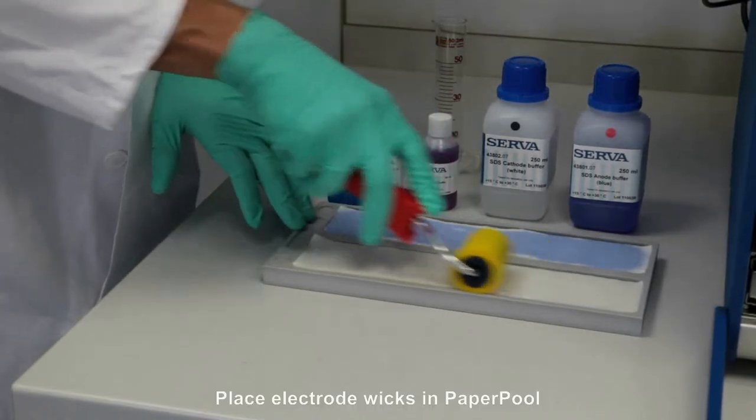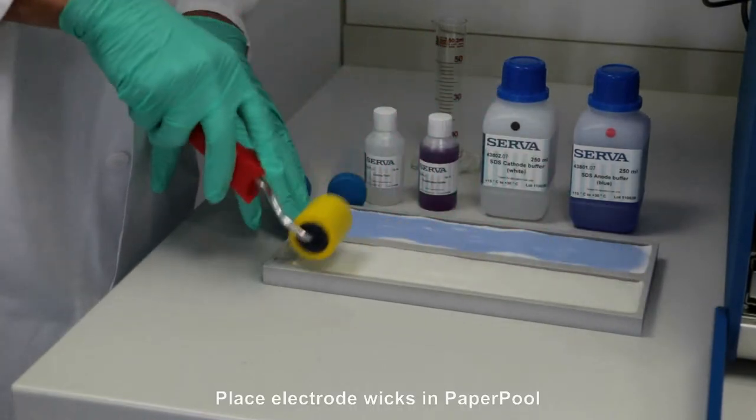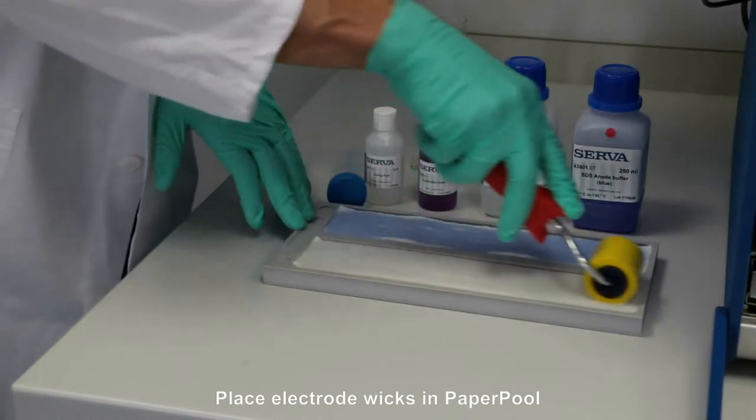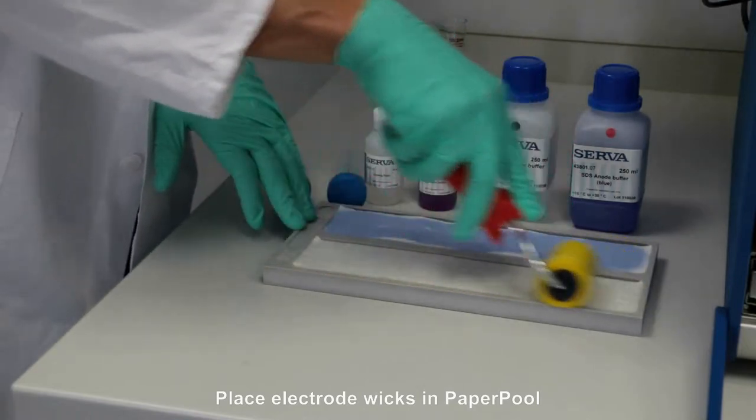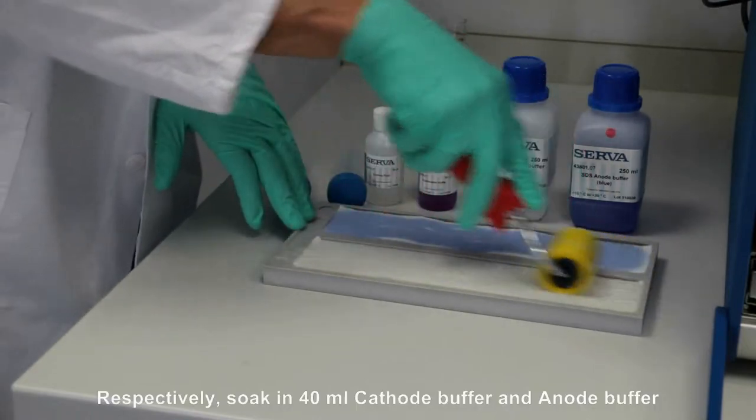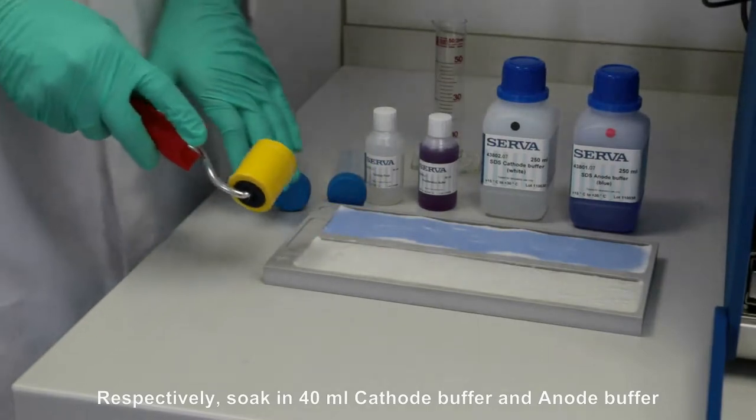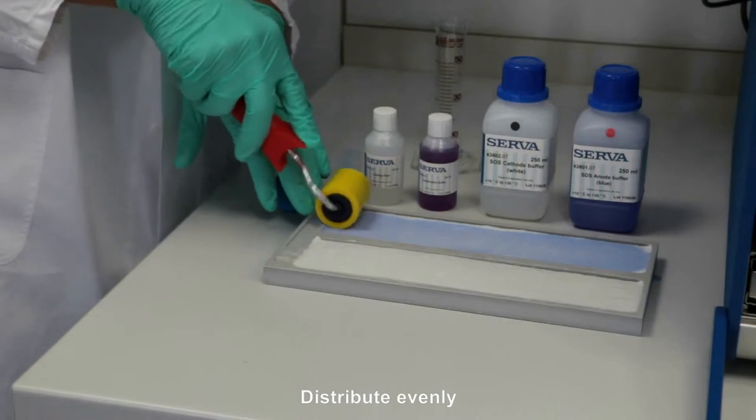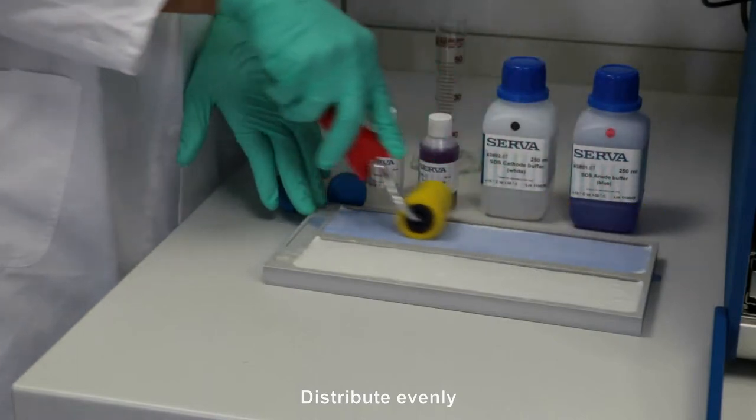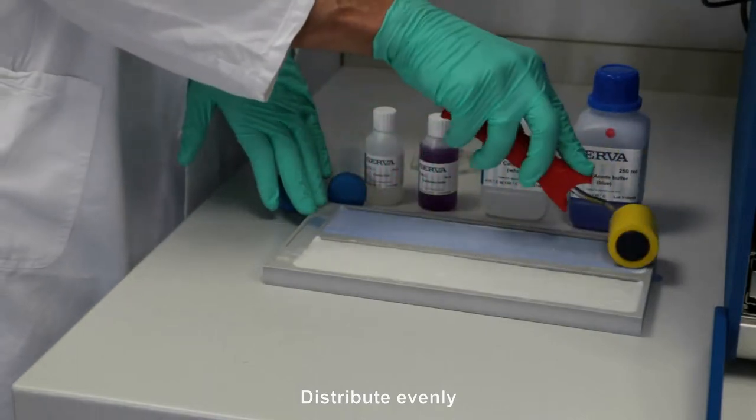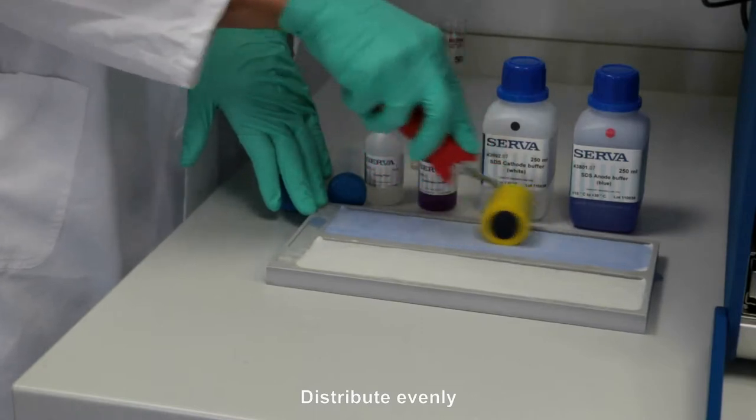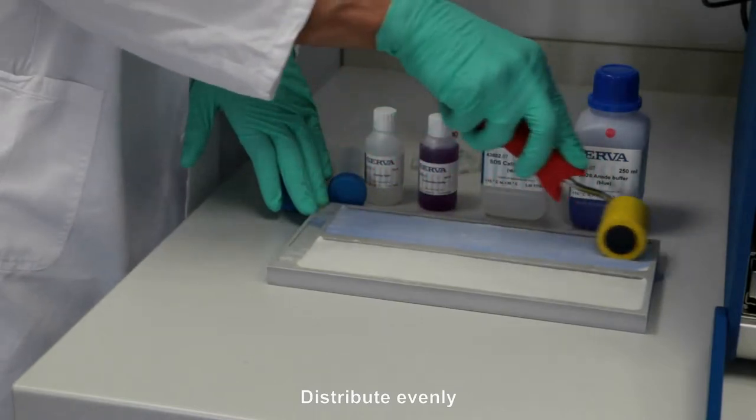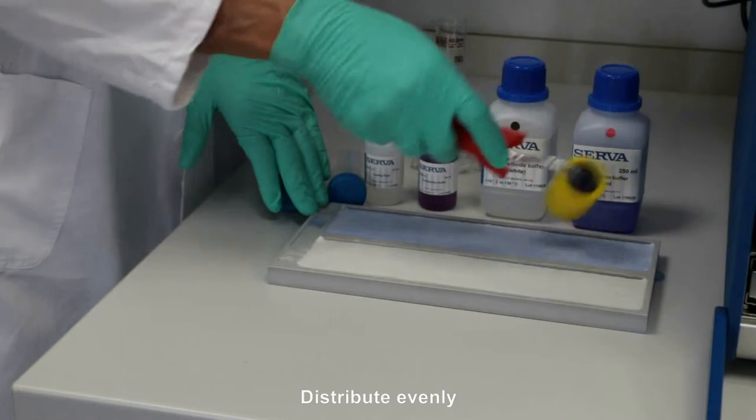During the focusing of the IPG strips, place one electrode wick in each compartment of the paper pool. Soak one wick with 40ml cathode buffer, the other with 40ml anode buffer. The anode buffer is stained to avoid a mix-up. Distribute the buffers evenly with the yellow roller. Avoid spilling blue buffer on the other wick.